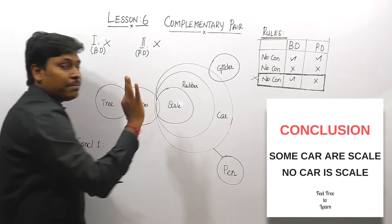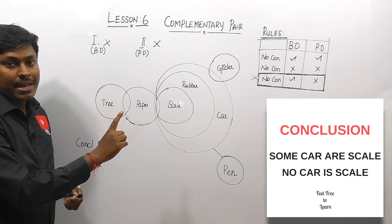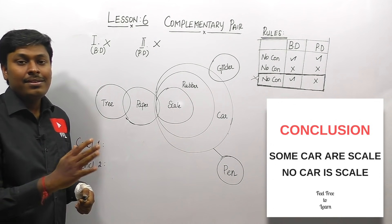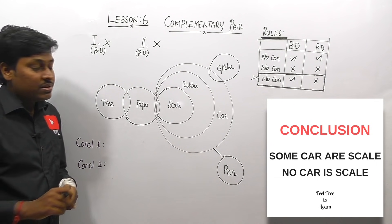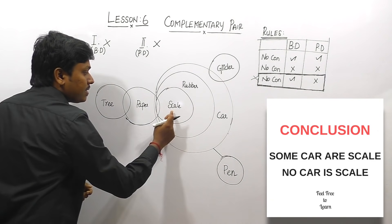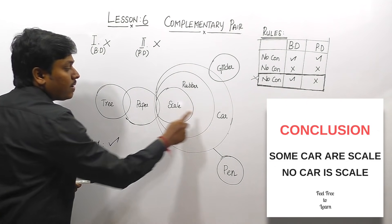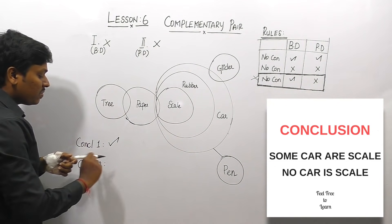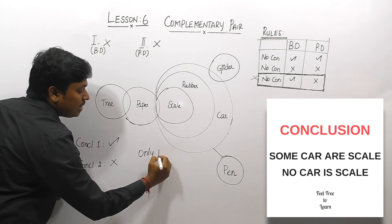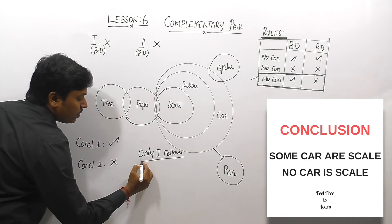Since the 'No' conclusion is false in both the basic diagram and the possible diagram, it does not satisfy rule number three, so we should not say the answer is 'either or'. Check each conclusion separately. Conclusion one — 'Some car or scale' — is true. Conclusion two — 'No car is scale' — is false in both diagrams. So the final answer is 'only one follows'.